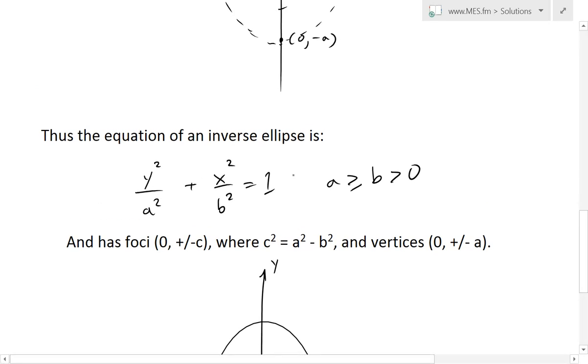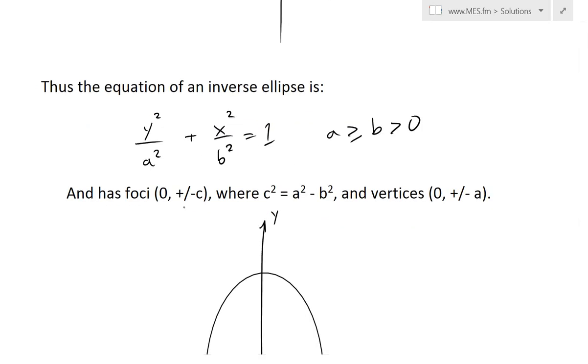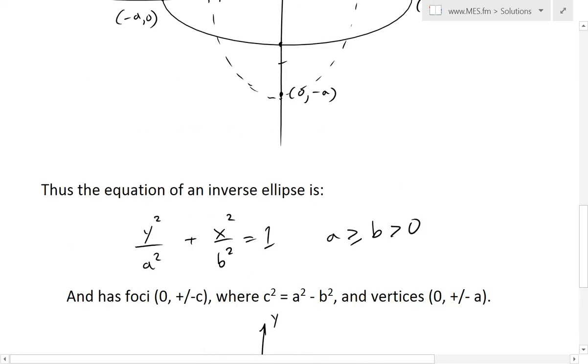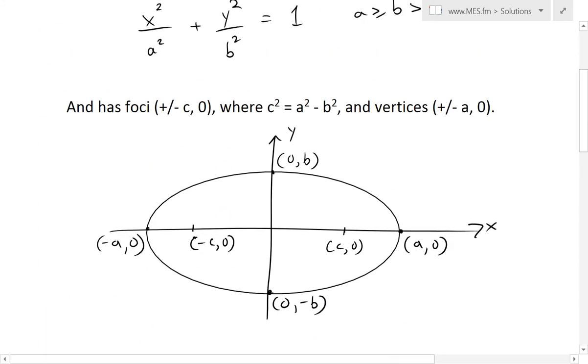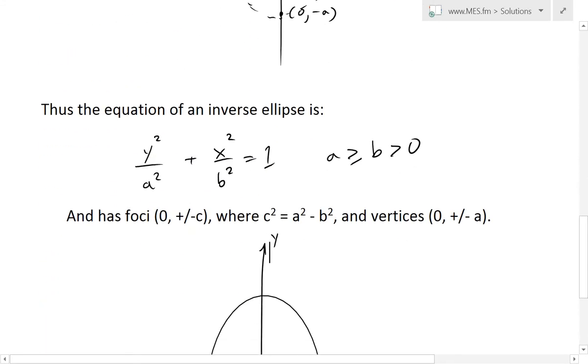And now this equation or this ellipse has foci at 0 and plus or minus c, so we basically just switched over this plus or minus c and 0. So basically we switch over everything, c squared is still going to be equals to a squared minus b squared, and over here vertices now are switched from...